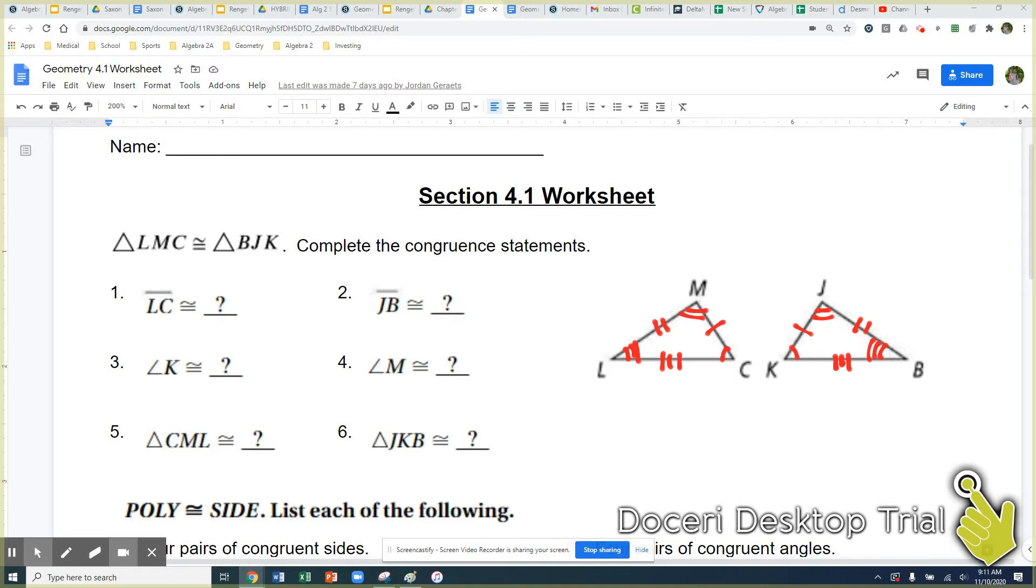So here's our statement. We can also use kind of a visual here as we start to match up these sides. So here we first have LC is congruent to something. So I'm going to go over and find LC. LC represents this side right here and I'm going from L over to C here.